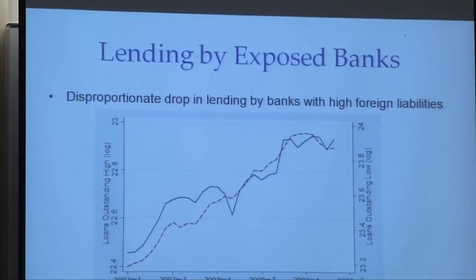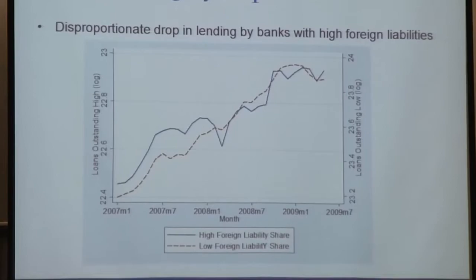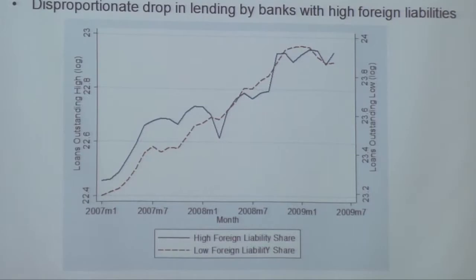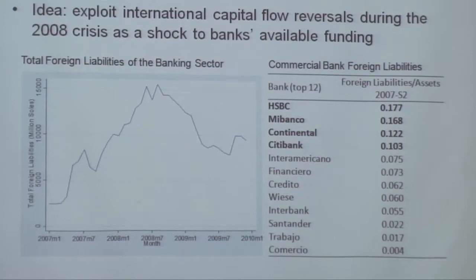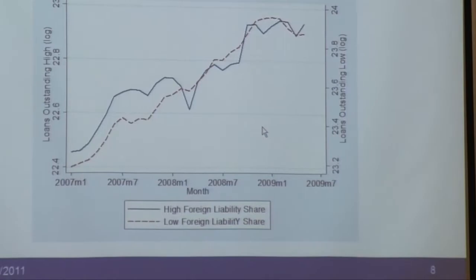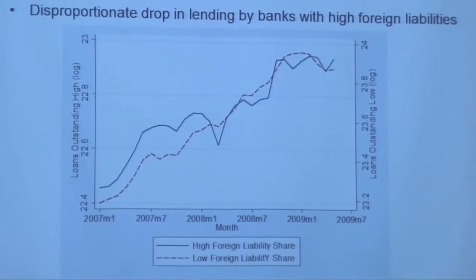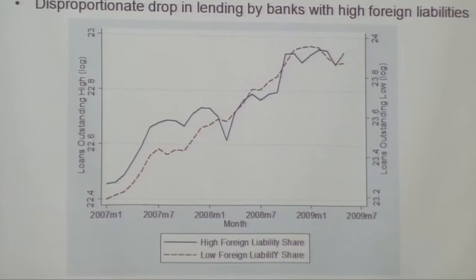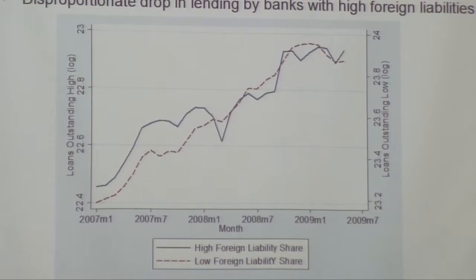The results can be summarized in two pictures. The first plot shows on the vertical axis the log of total outstanding loans by two types of banks: banks with a high share of foreign liabilities and banks with a low share. We made the cut at Citi, comparing lending by HSBC, MiBanco, Continental, and Citi relative to the rest. The solid line shows total loans outstanding by these four banks, and the dashed lines show total loans outstanding by the rest. They move in parallel all the way up to the beginning of 2008 — that big drop coincides with the month after Bear Stearns. Lending by banks with high reliance on foreign liabilities drops dramatically relative to the control group of banks.